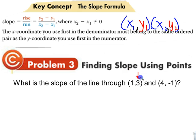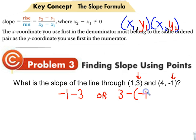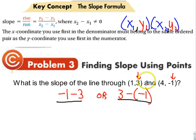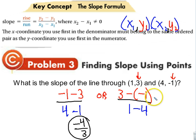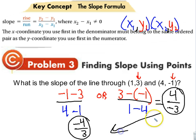Find the slope of the line through (1, 3) and (4, -1). Y1 is 3 and Y2 is -1. If I do negative 1 minus 3, I also do 4 minus 1 — I have to be consistent. Negative 1 minus 3 is negative 4, and 4 minus 1 is 3, so the slope is negative four-thirds. The other order gives 4 over negative 3 — same answer. Notice the answers are the same.